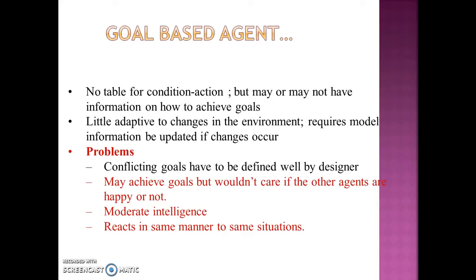To summarize, goal-based agents do not have any table for condition-action mapping and may or may not have information on how to achieve goals. If it does not have that information, it becomes an exploration problem; otherwise, it is simpler and can be solved with a goal-based agent. This agent architecture is somewhat adaptive to changes in the environment, and whenever there are such changes, it requires the model information to be updated.